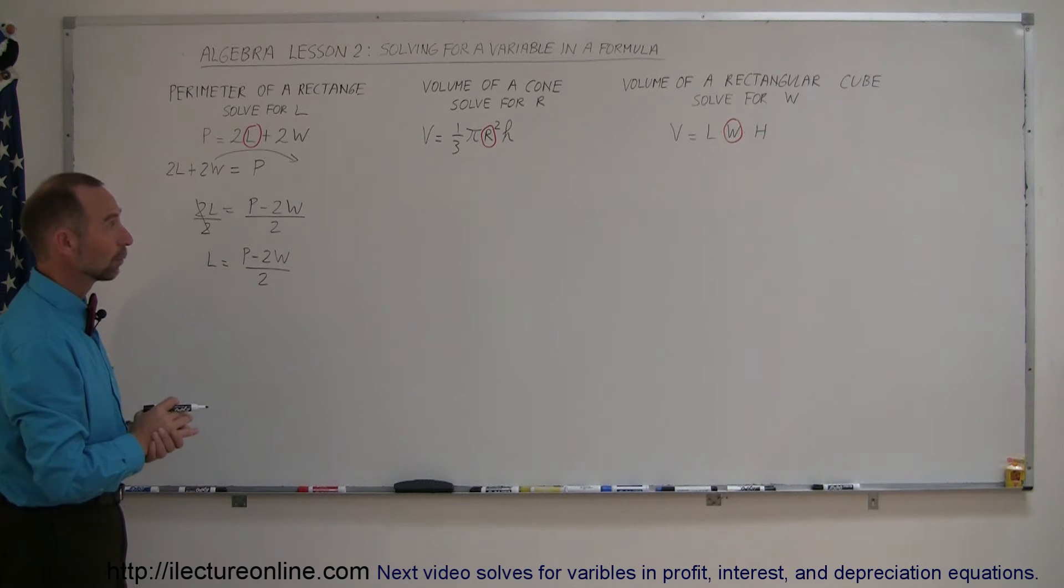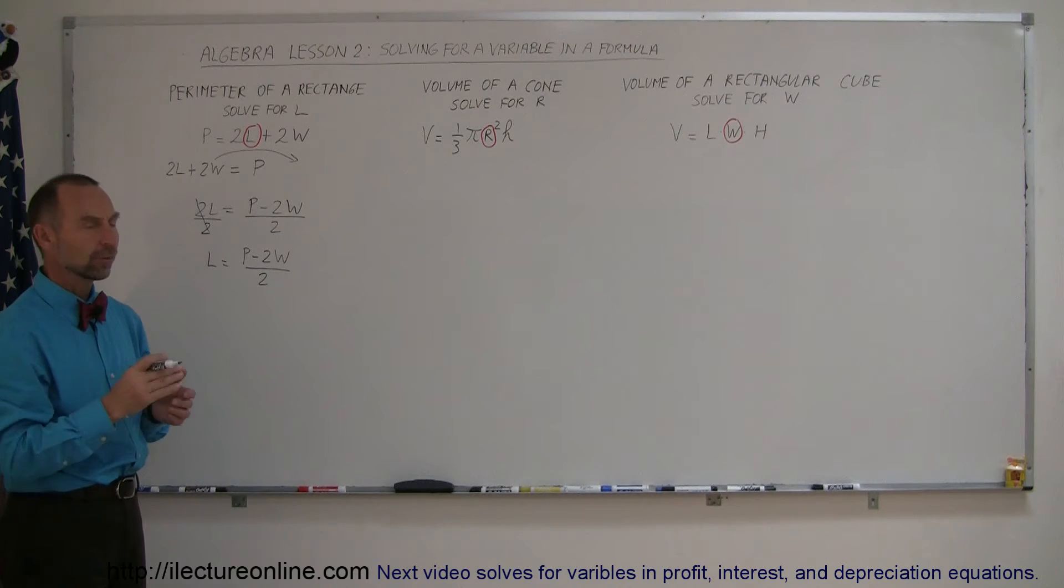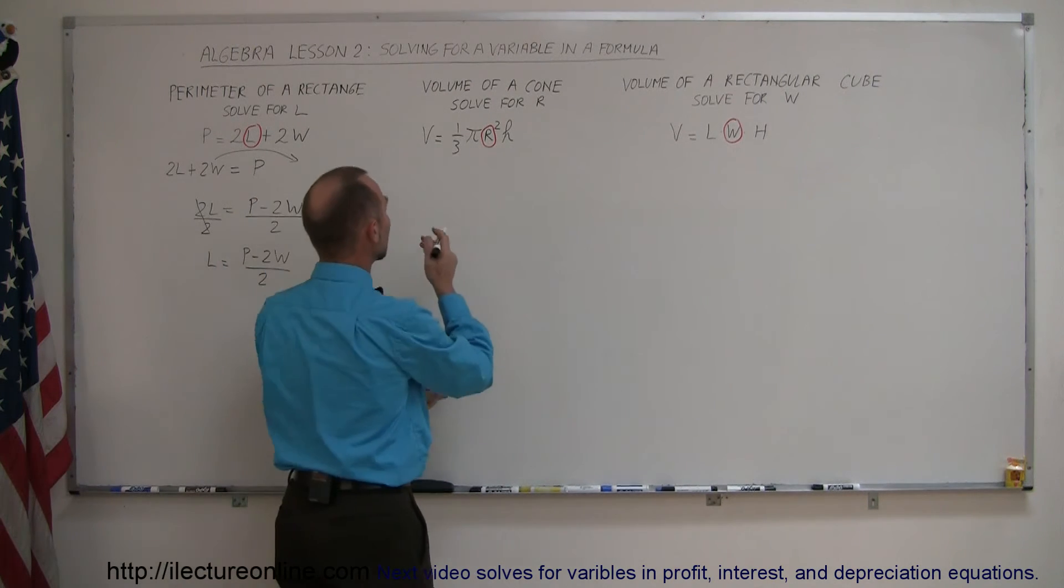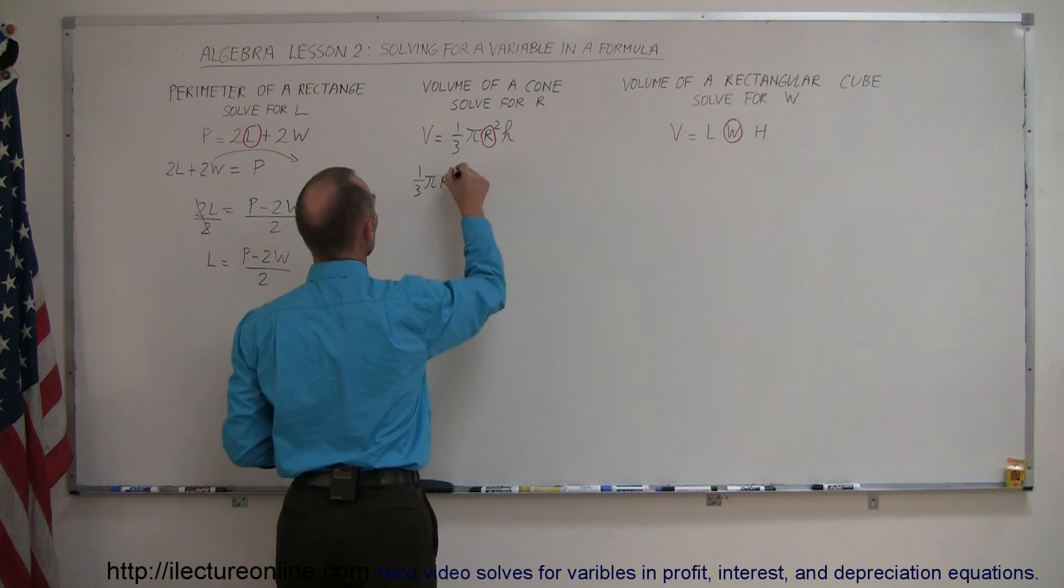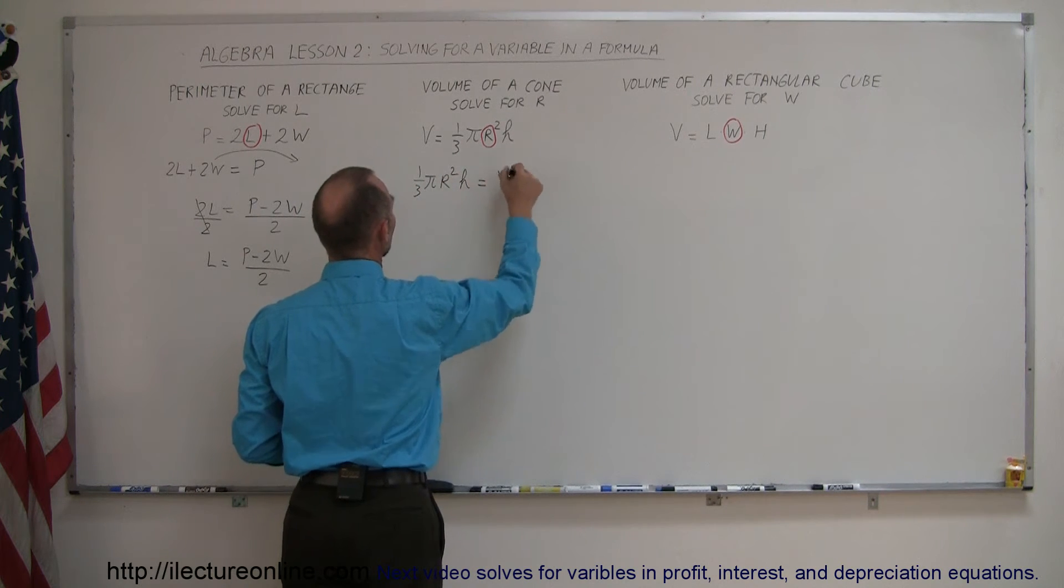Next equation, we're looking for R, it's the radius of the base of the cone. So since it's on the right side, we want to move to the left side, meaning we're simply switching the equation around. So we get 1/3 pi r squared h equals volume.